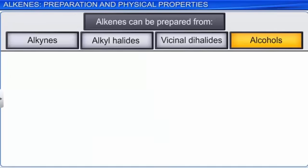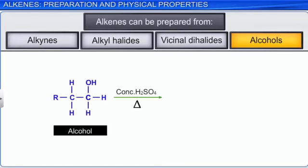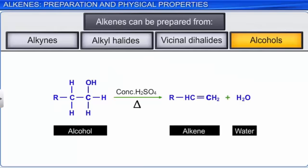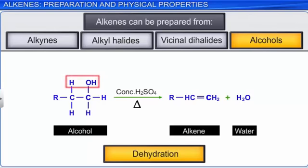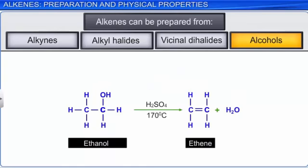Alkenes can also be obtained from alcohols using the acidic dehydration process. When heated with concentrated sulfuric acid, the OH group of the alcohol and one hydrogen atom from the adjacent carbon atom are eliminated in the form of a water molecule, forming an alkene. Hence, the reaction is said to be acidic dehydration of alcohol. An example of this would be the dehydration reaction of ethanol on heating with concentrated sulfuric acid to form ethene.